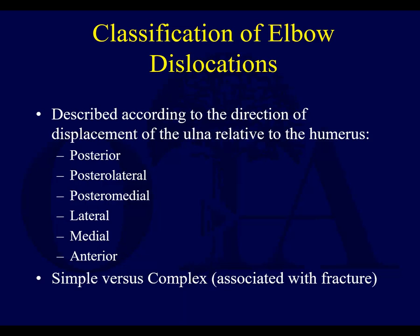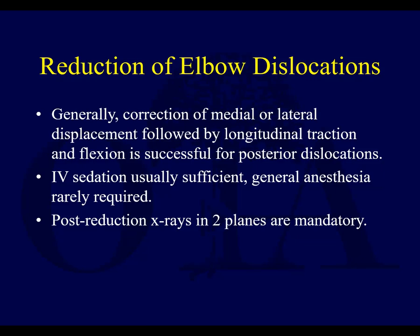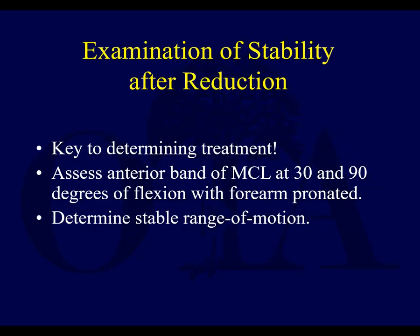Most people classify dislocations based on the direction of dislocation, and by far, posterior is the one you need to know — that's where it almost always occurs. Reduction involves correction of medial-lateral displacement and longitudinal traction. You rarely need general anesthesia for this. Get post-reduction x-rays to confirm reduction, and assess stability — if you don't know whether the elbow is stable or unstable, you may be surprised when the patient shows up in the office dislocated again.